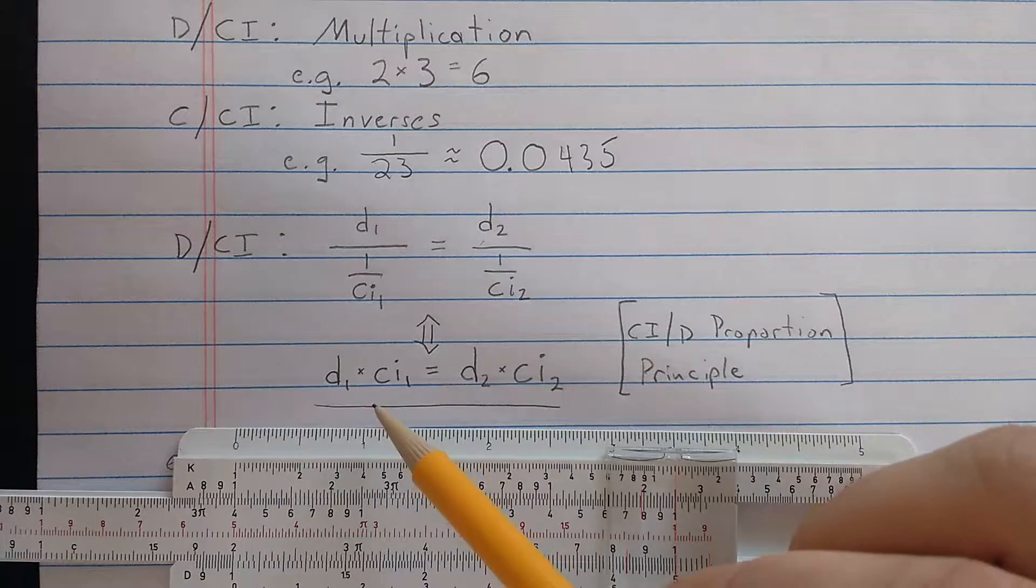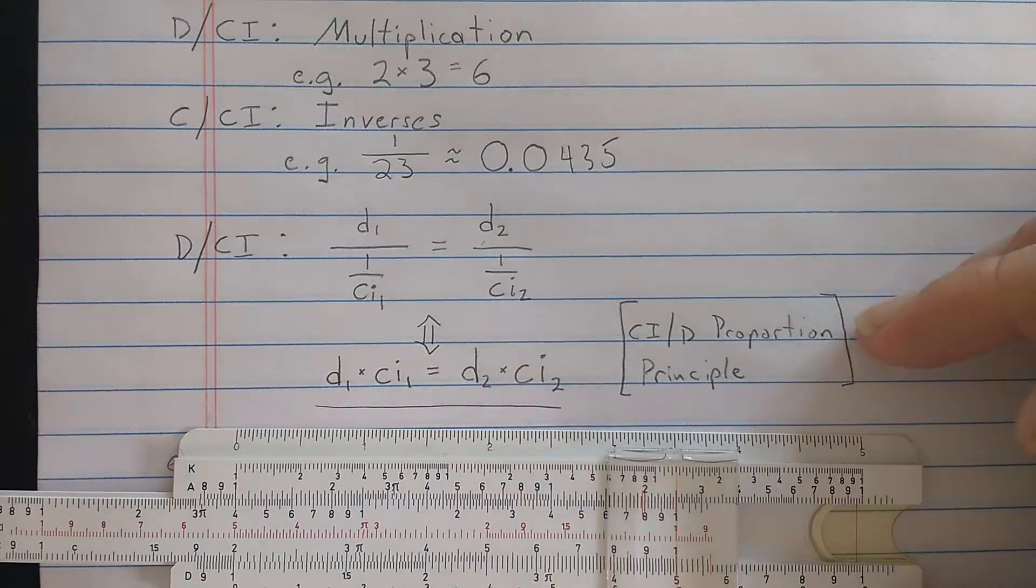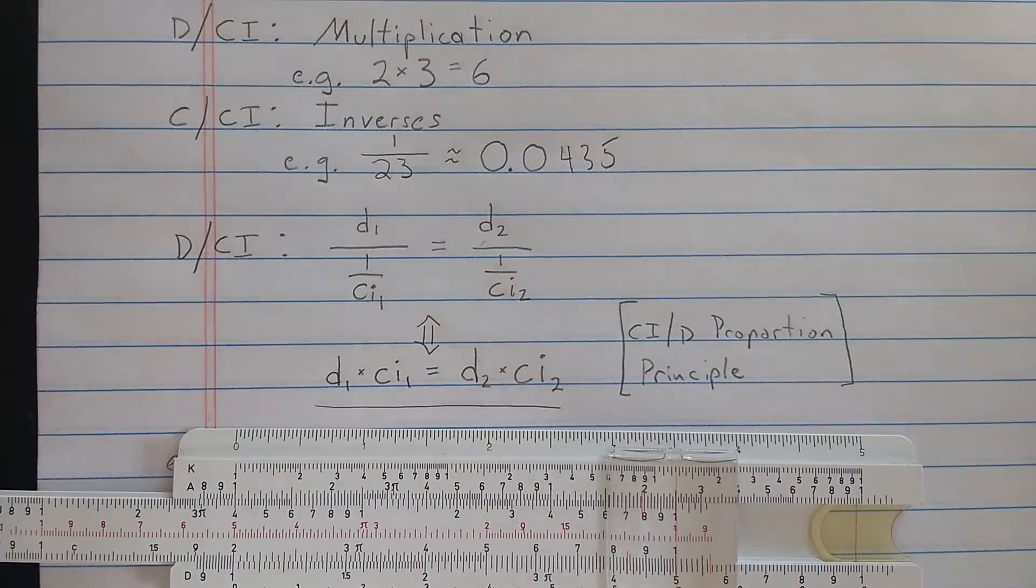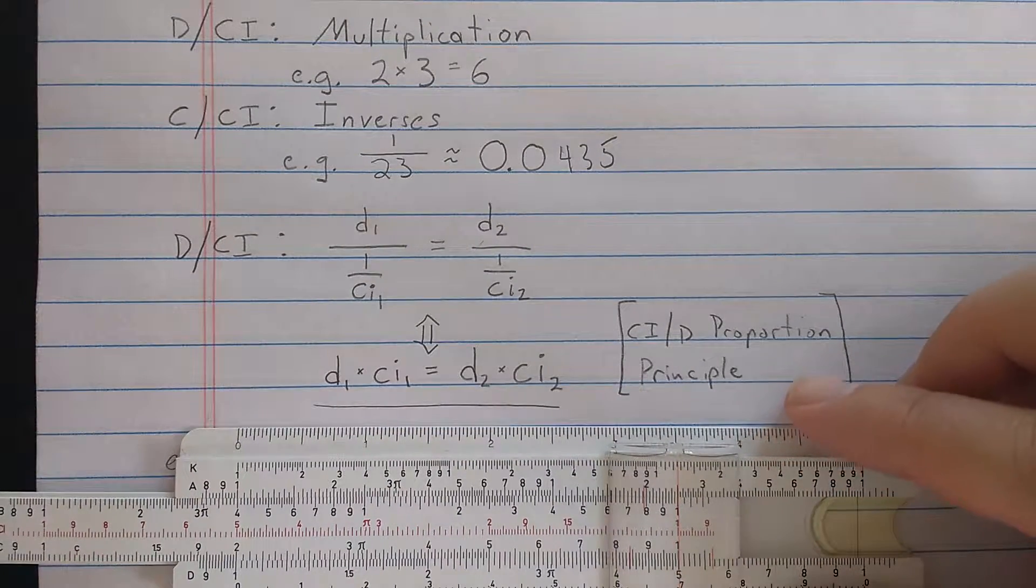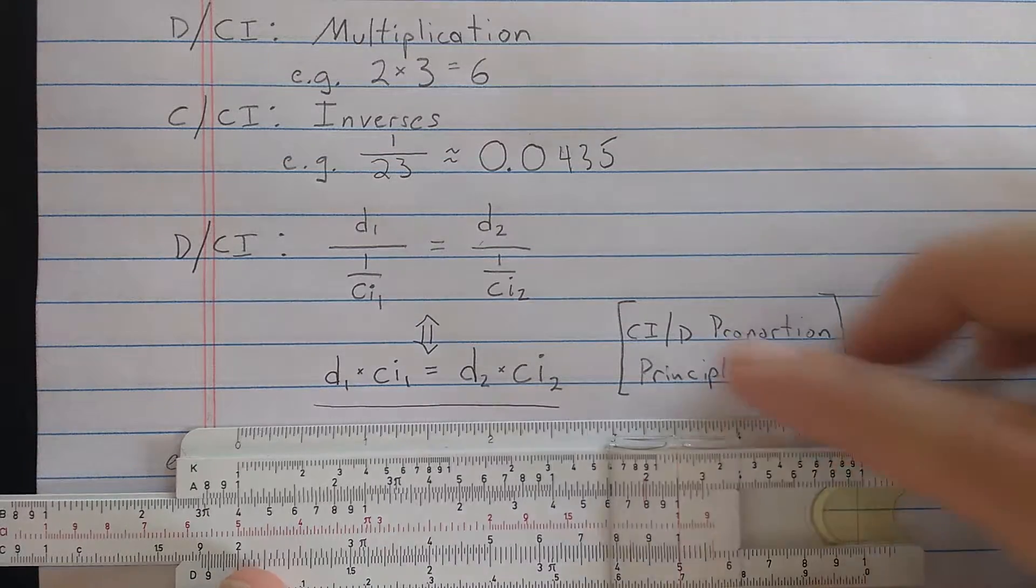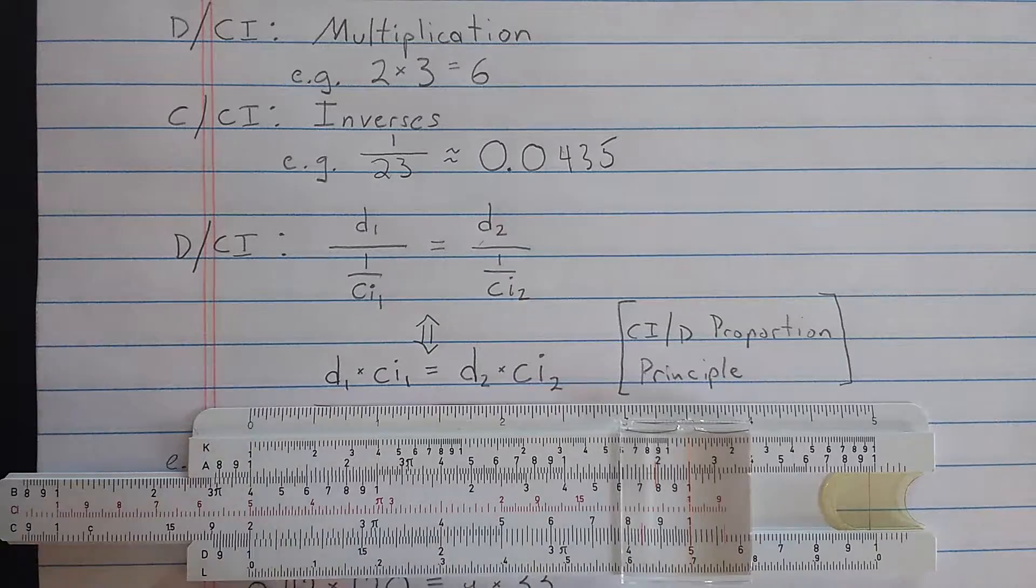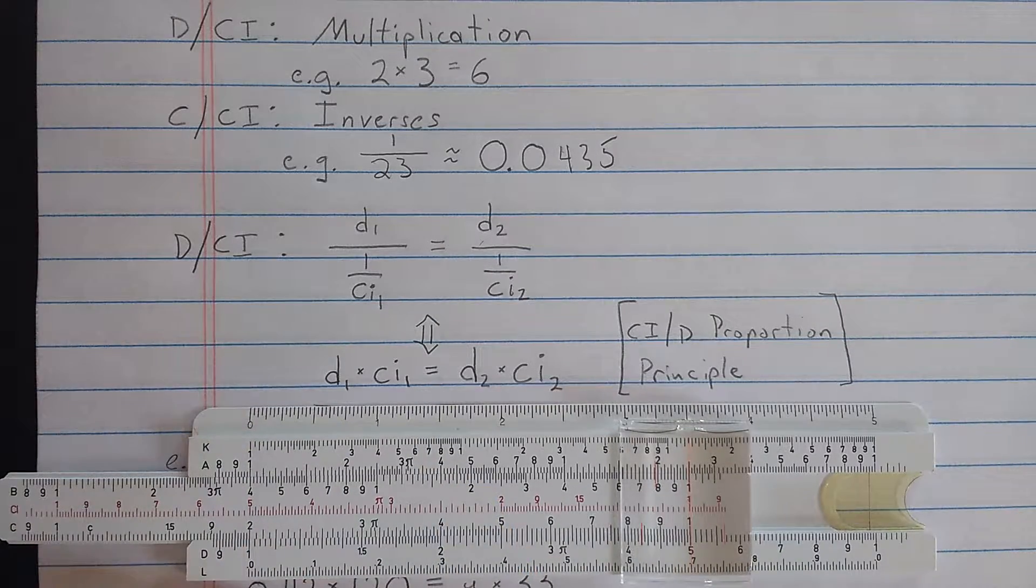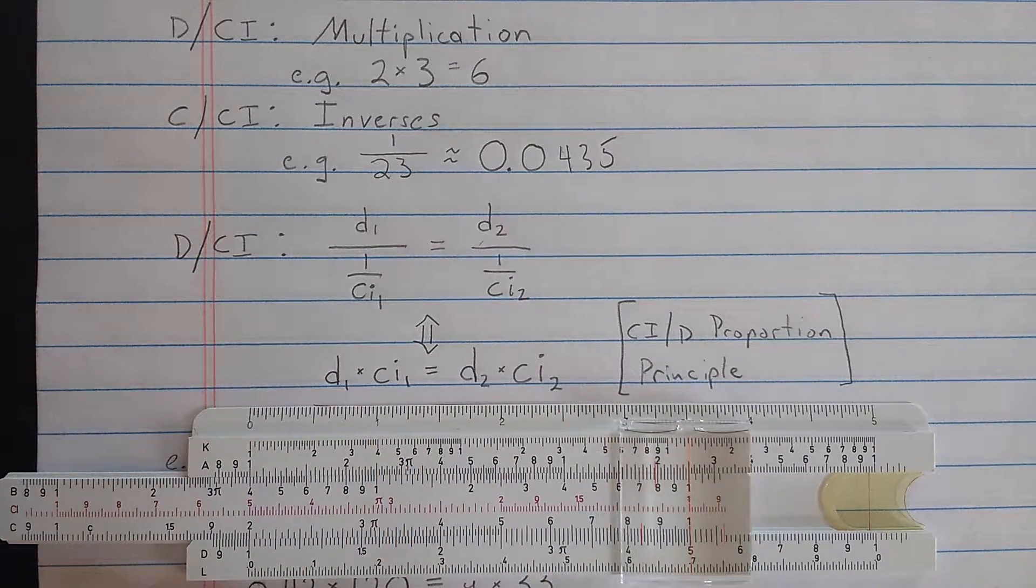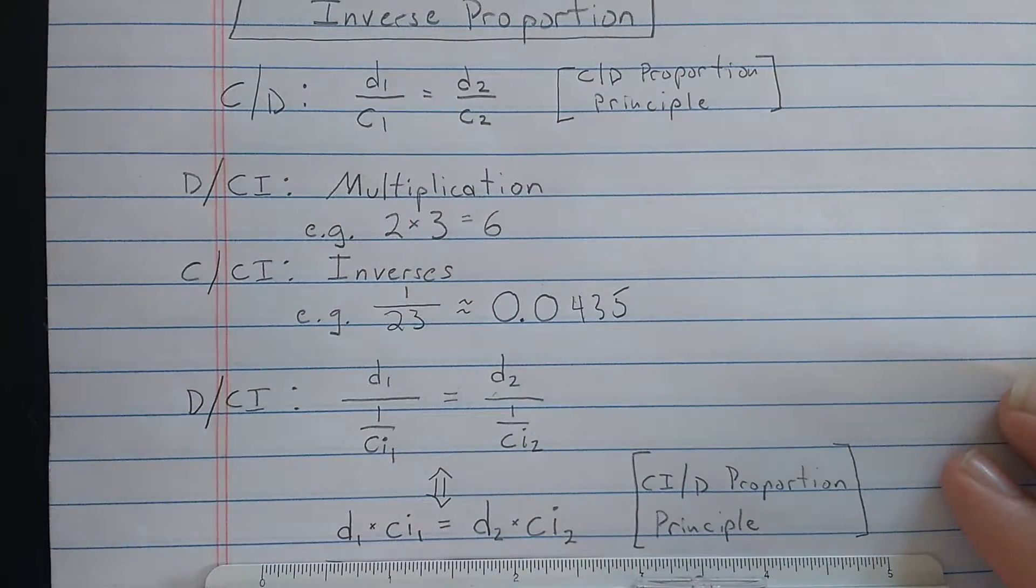And let's call this the CI slash D proportion principle. In other words, for math class, you know this is called an inverse proportion. And using the D scale and the CI scale can be used to solve those inverse proportions.